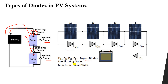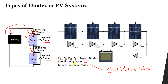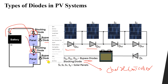The blocking diodes are not inside the junction box — they exist inside the charge controller, which is used to charge the batteries. The charge controller has the blocking diodes, which prevent power flow from the battery back to the panels.